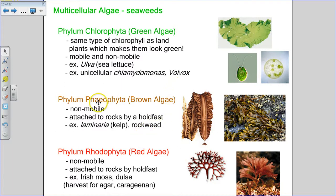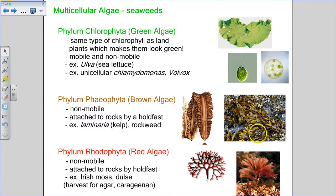Phylum phaeophyta — 'phaeo' referring to brown — are the brown algae. They're non-mobile and have a holdfast that attaches them to rocks. Examples include laminaria, or kelp, which is a really long, wide brown seaweed, and fucus, or rockweed. Those little sacks on rockweed that you might have burst at the beach — some are air sacks that help the plant float near the sun for photosynthesis, and some actually hold gametes — eggs and sperm — so bursting them may allow reproduction.